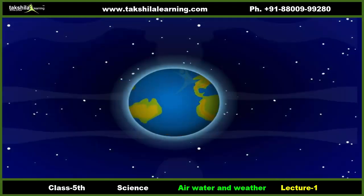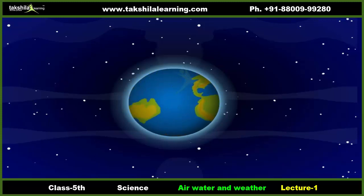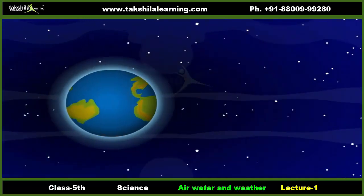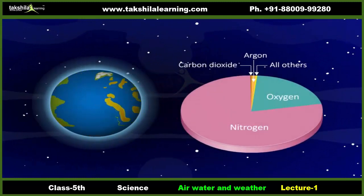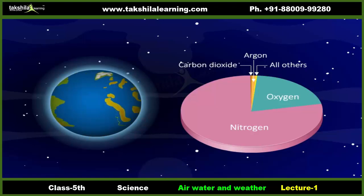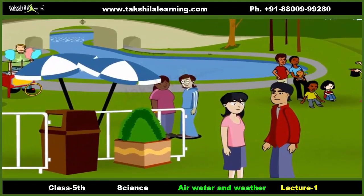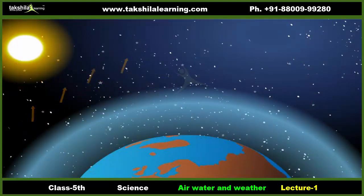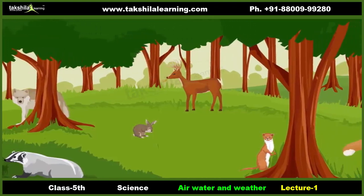Do you know the atmosphere surrounding earth is full of air? The atmosphere is made up of a mixture of gases, primarily nitrogen and oxygen, that wrap around the earth like a blanket. Without the atmosphere we would not be able to live here. It protects us from the dangerous rays coming from the sun and makes earth a perfect habitat for plants and animals.